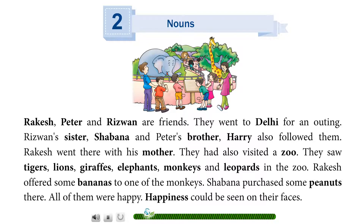They had also visited a zoo. They saw tigers, lions, giraffes, elephants, monkeys and leopards in the zoo. Rakesh offered some bananas to one of the monkeys.